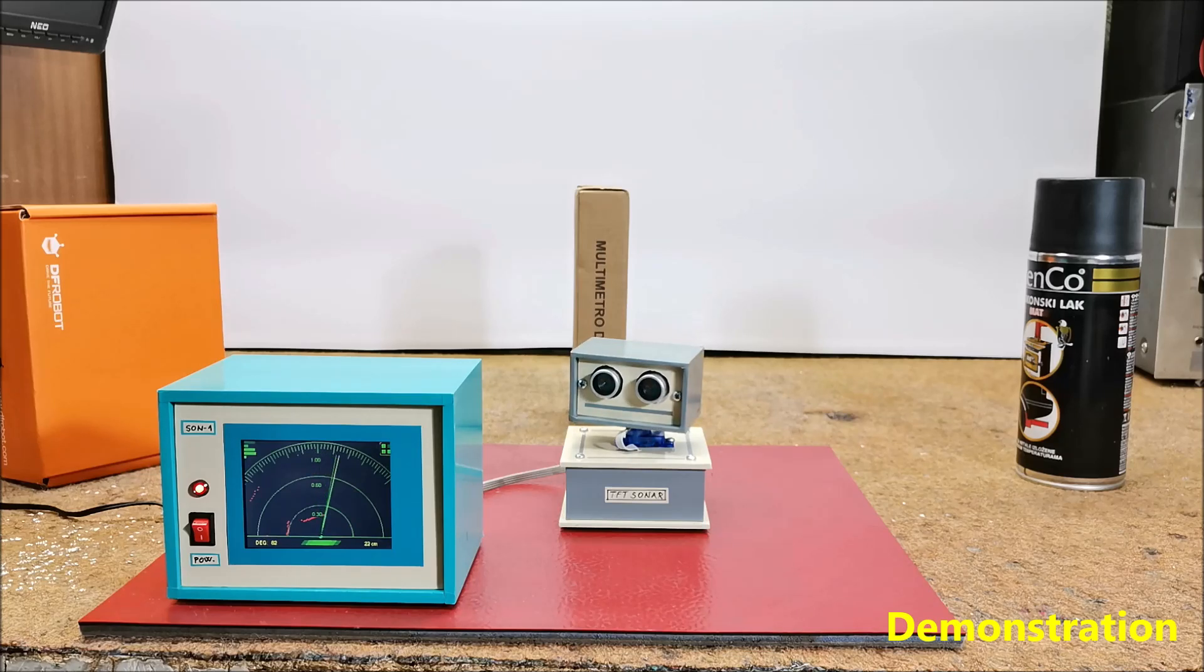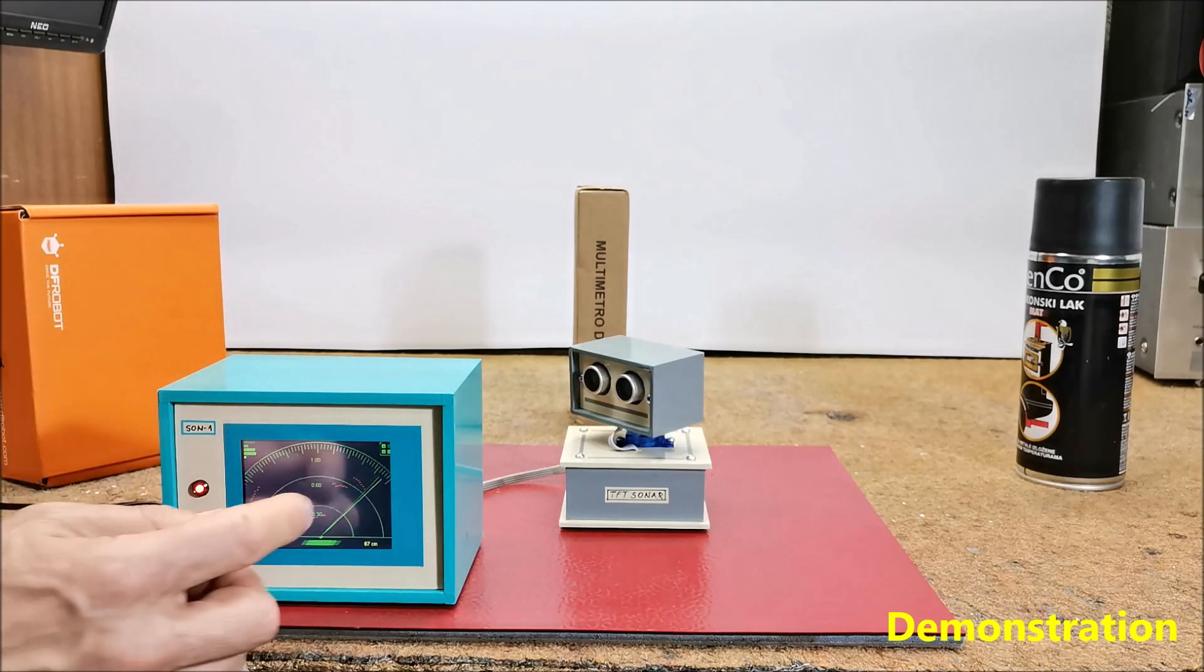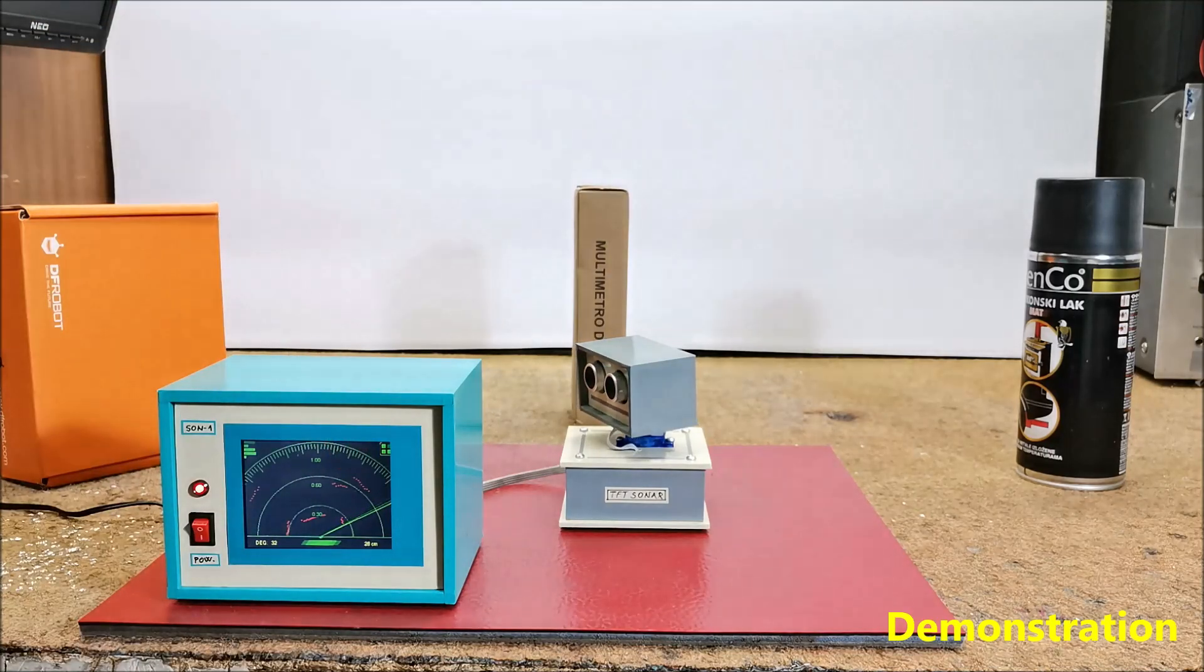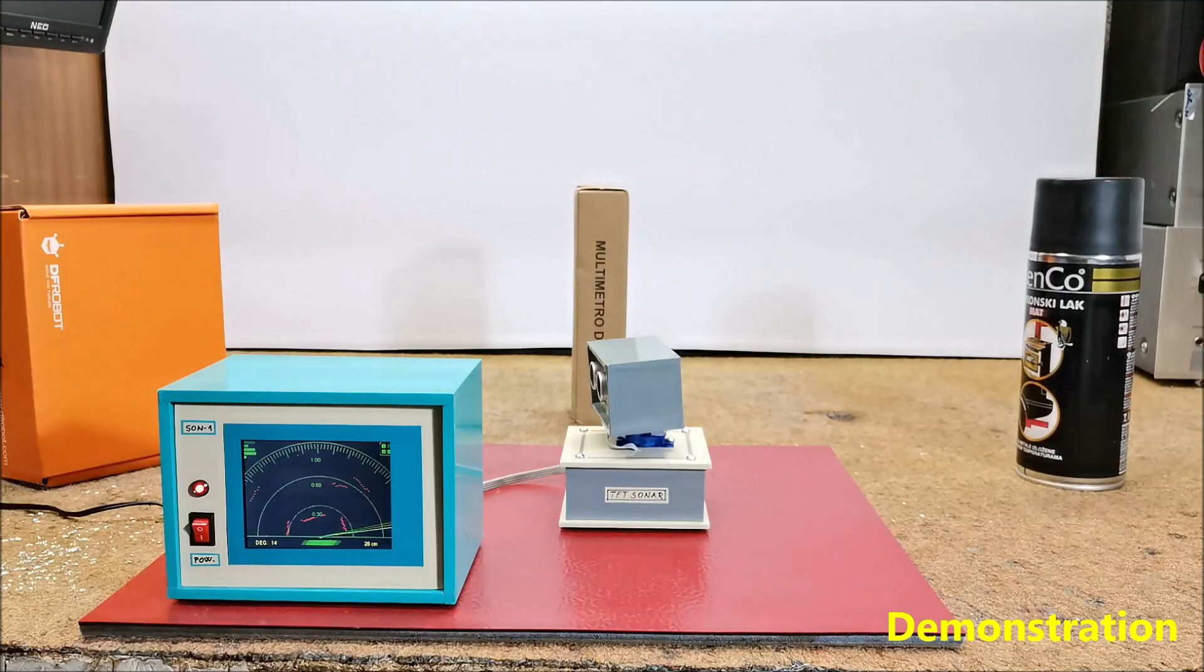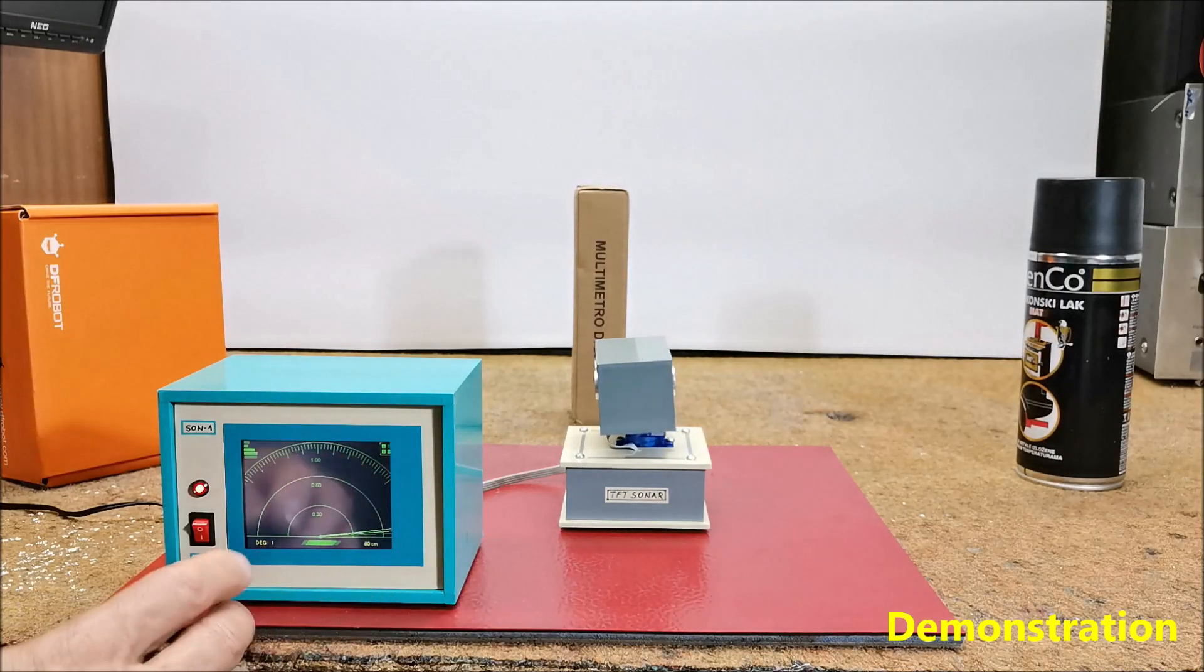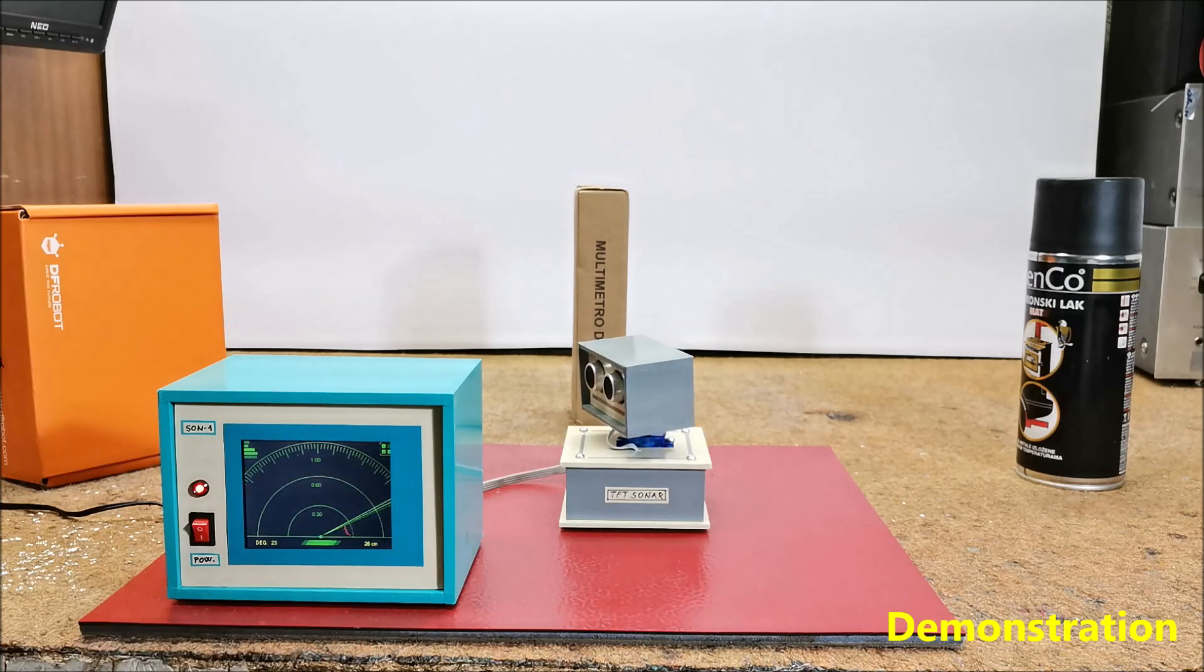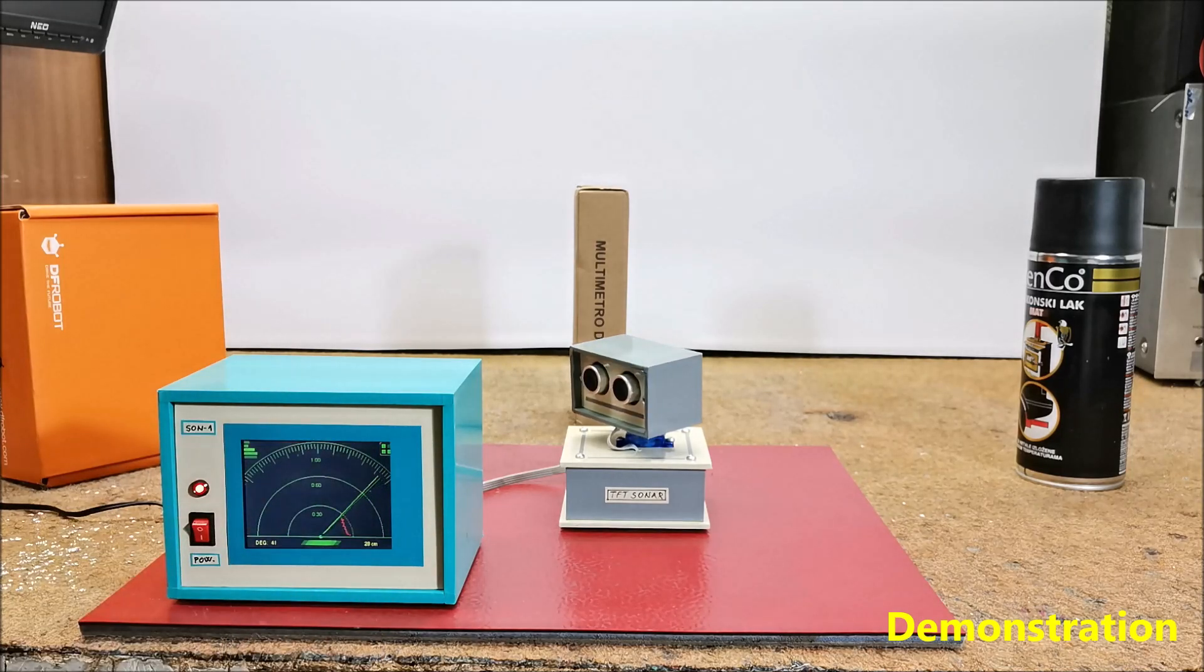So this is the first obstacle, this is the wall, second obstacle, again wall, and third obstacle. Scanning is performed first from 180 degrees to 0 and vice versa from 0 to 180 degrees.